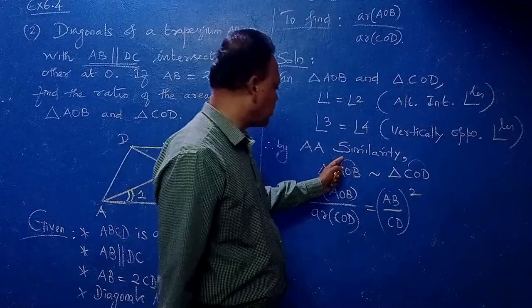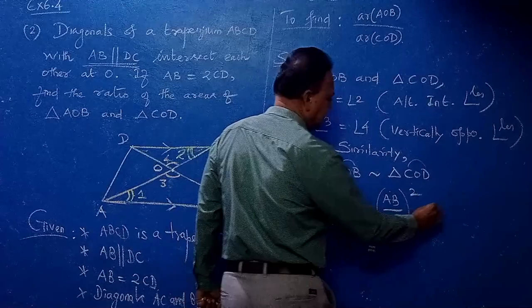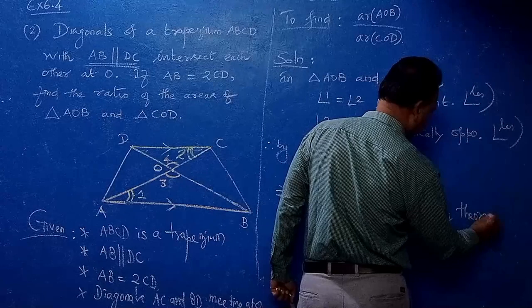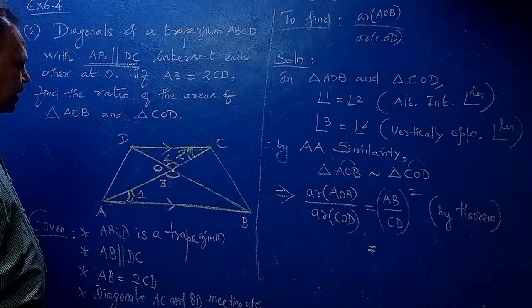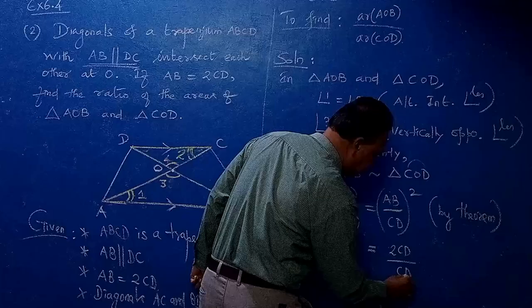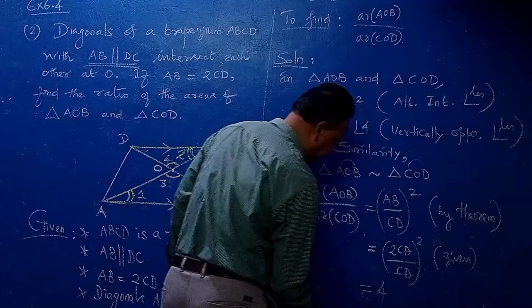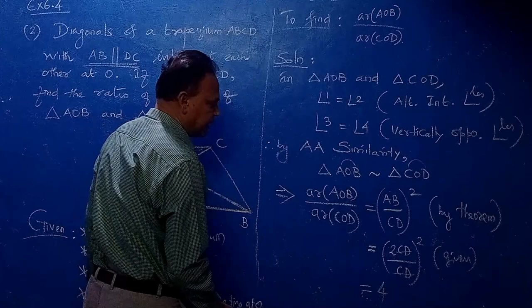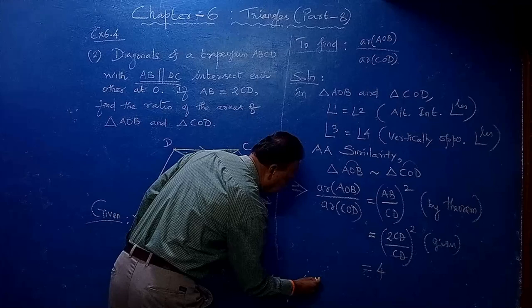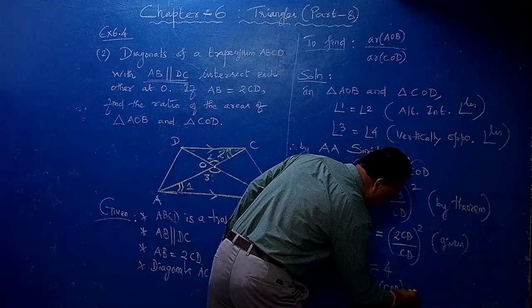Only the necessary corresponding side you write — no need for the full formula. It is given that AB equals 2CD. So substitute: (AB by CD) whole squared equals (2CD by CD) whole squared. CD gets cancelled, giving 2 squared which is 4. Therefore the ratio is 4 by 1, meaning area of AOB by area of COD equals 4:1.